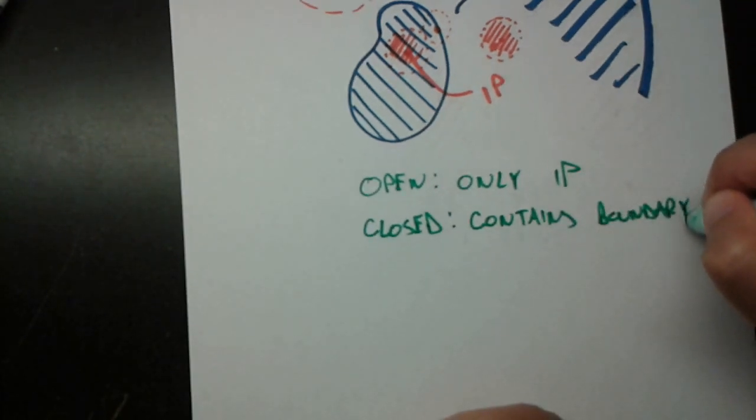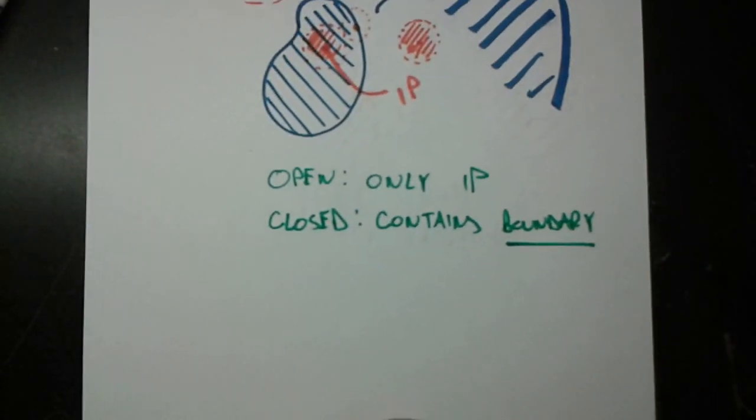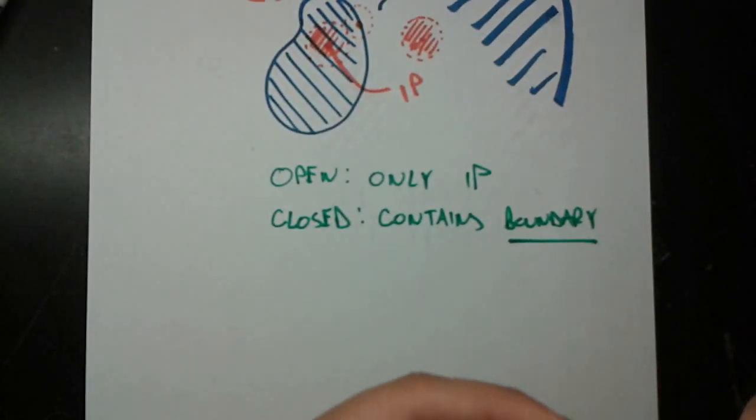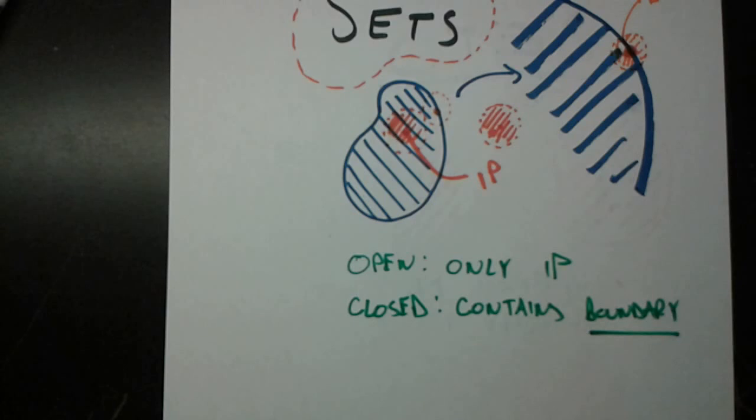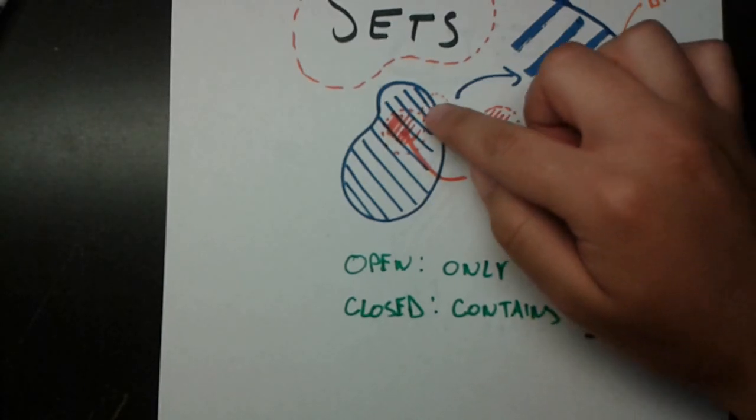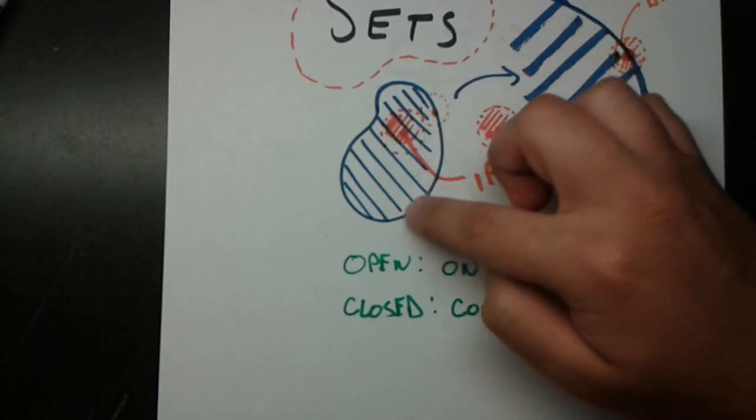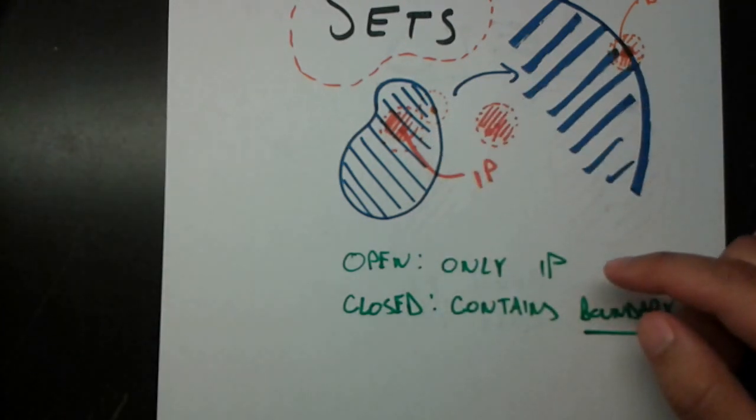And as promised, we'll learn the technical term for boundary. Boundary is simply the collection of all boundary points. So for this blue set here, the boundary would be what we think it is, the outside, because all of these are boundary points.